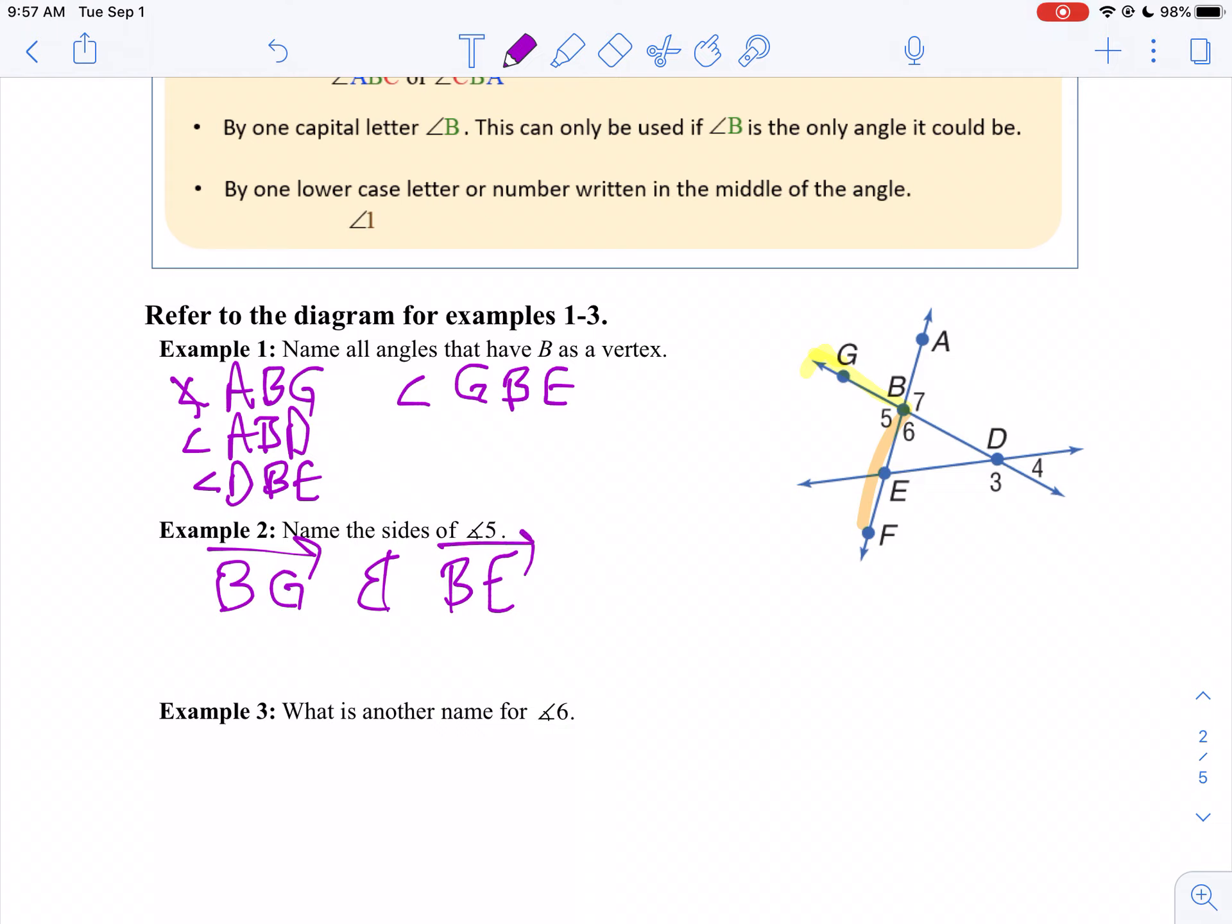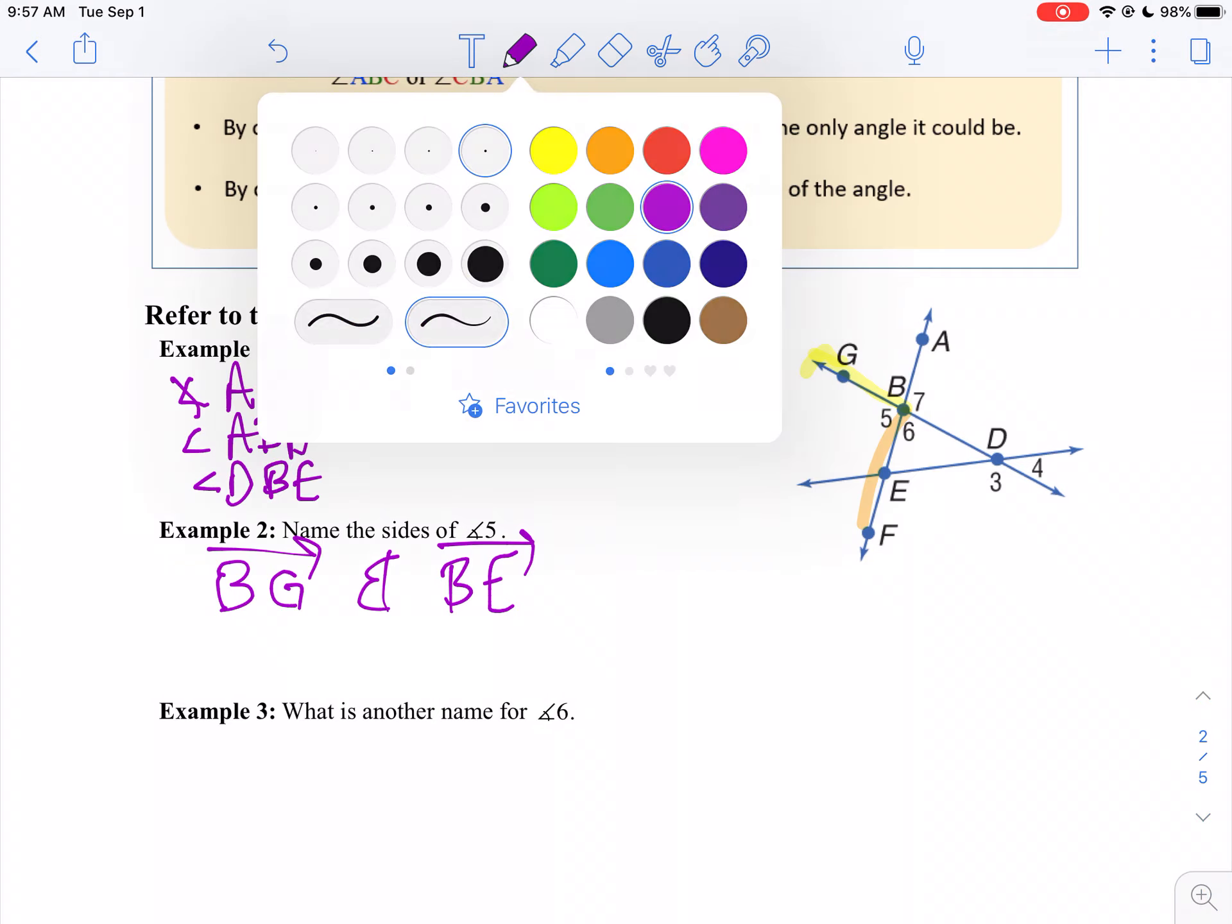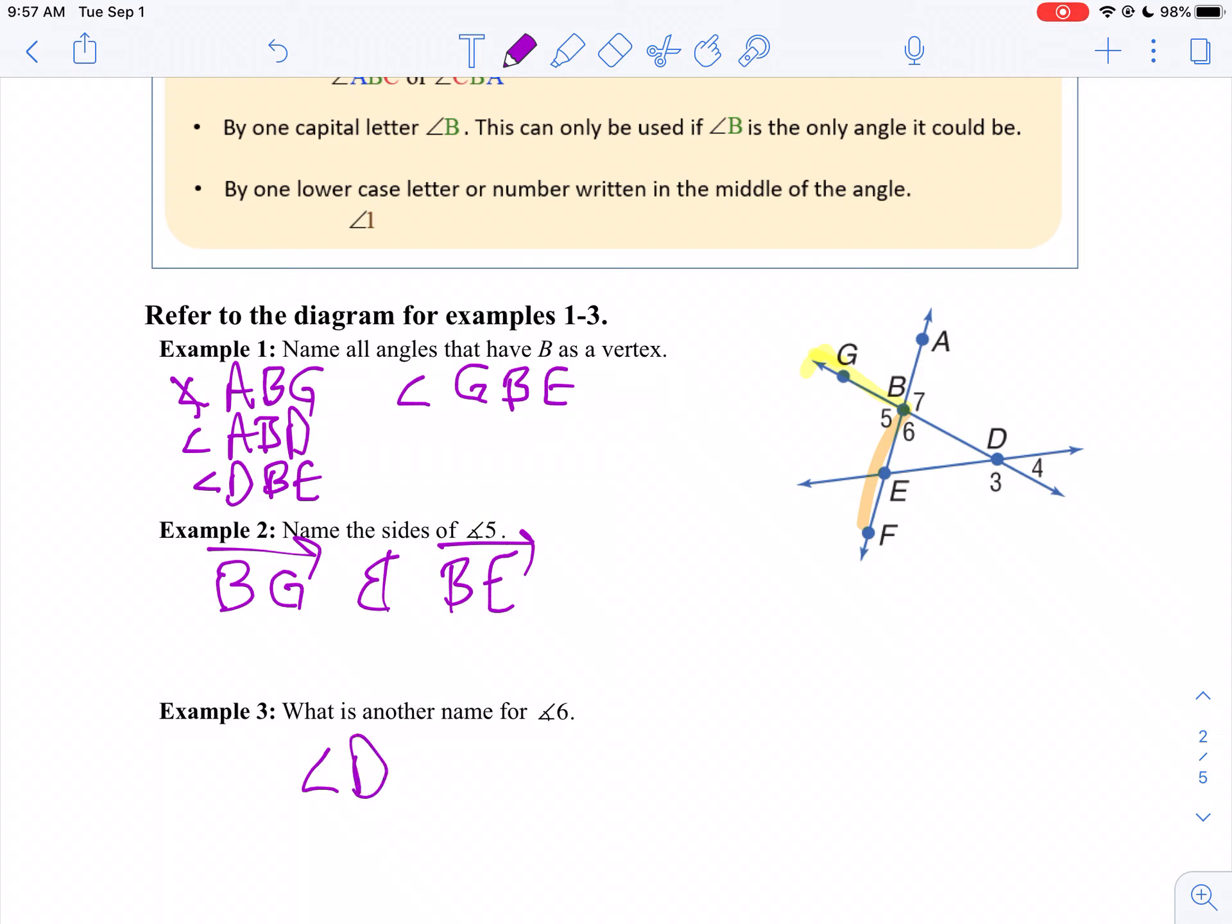And then another name for angle 6, we're going to use three letters there. Angle D to B to E. That's where we get that angle from, angle 6.